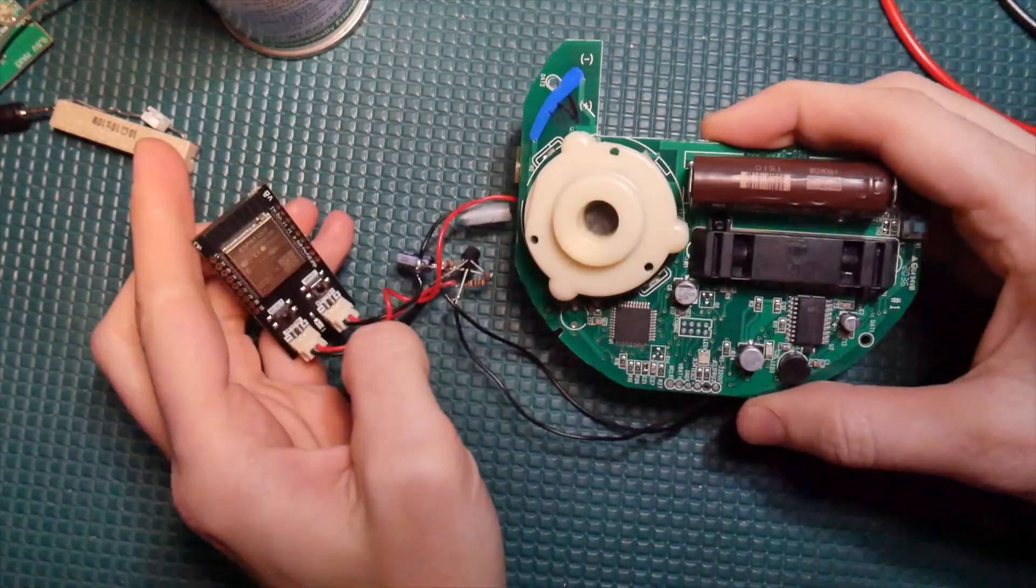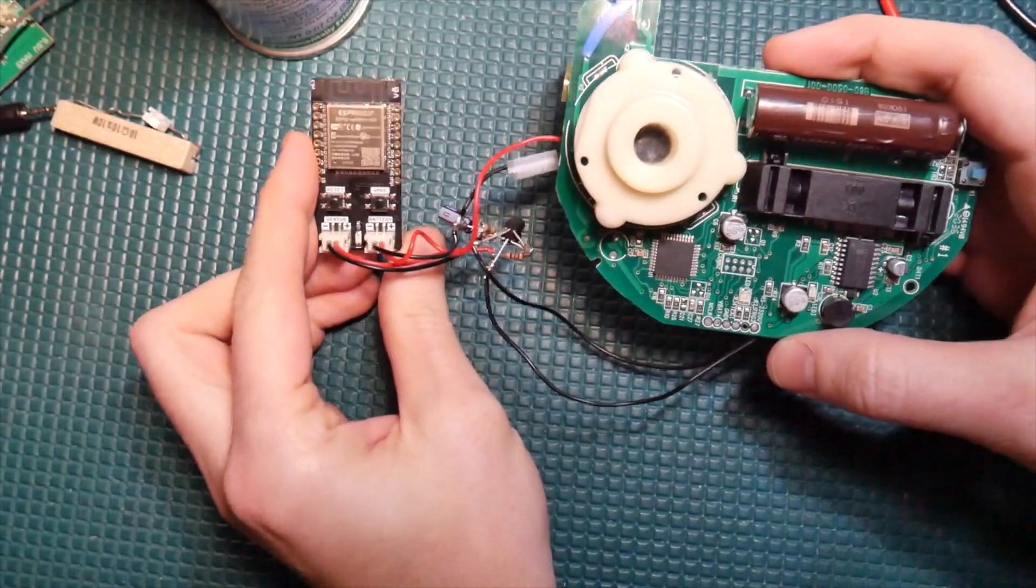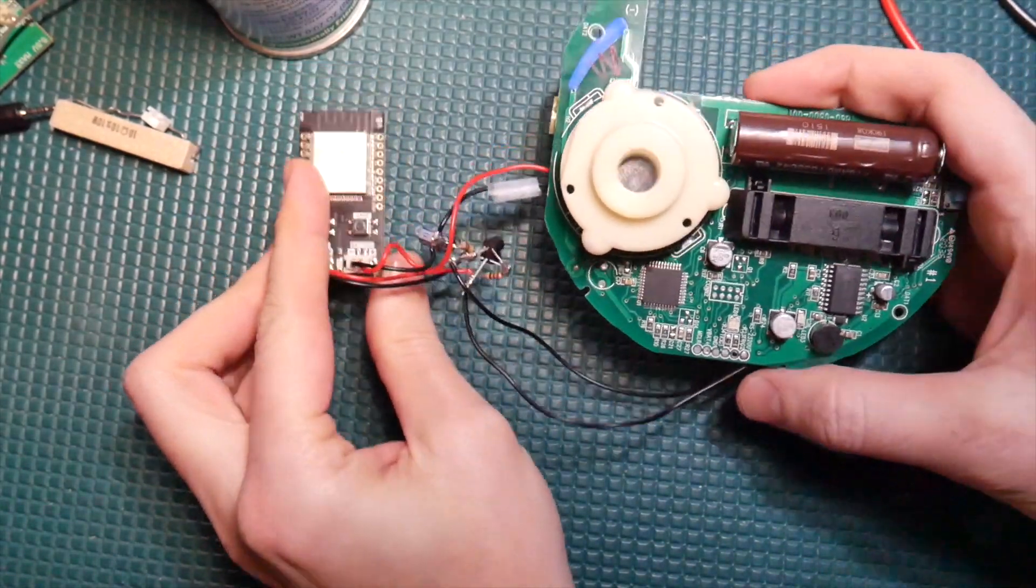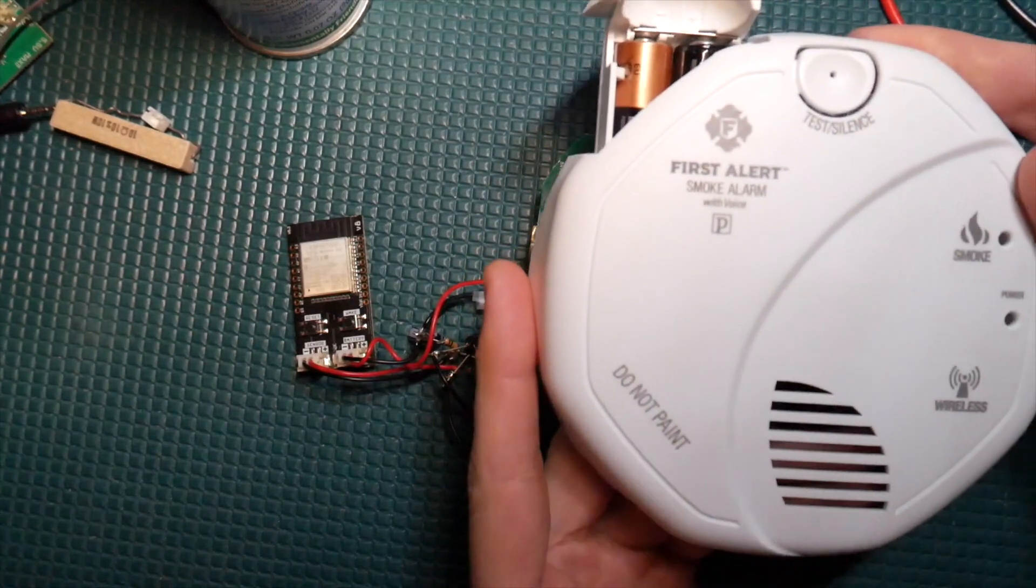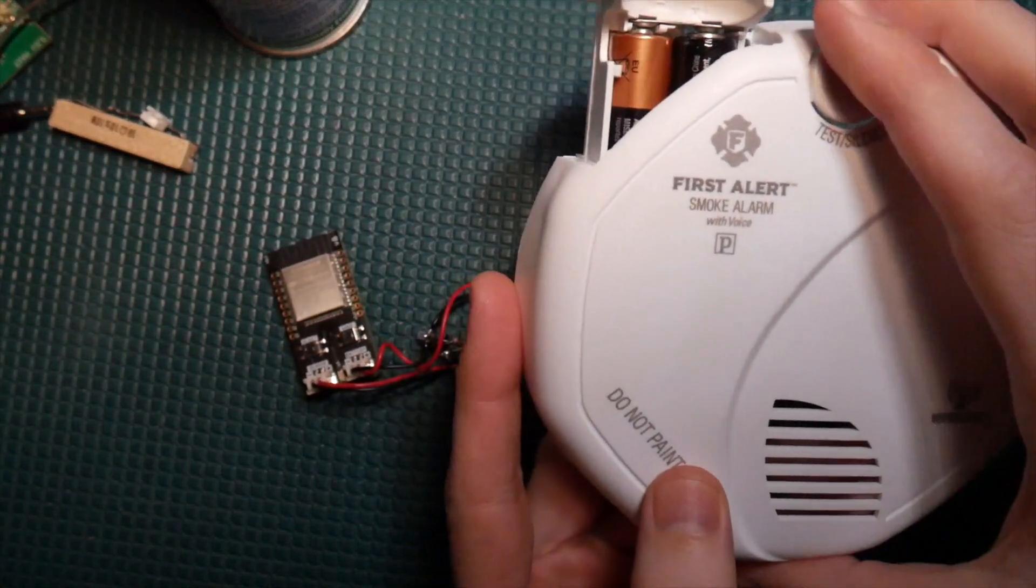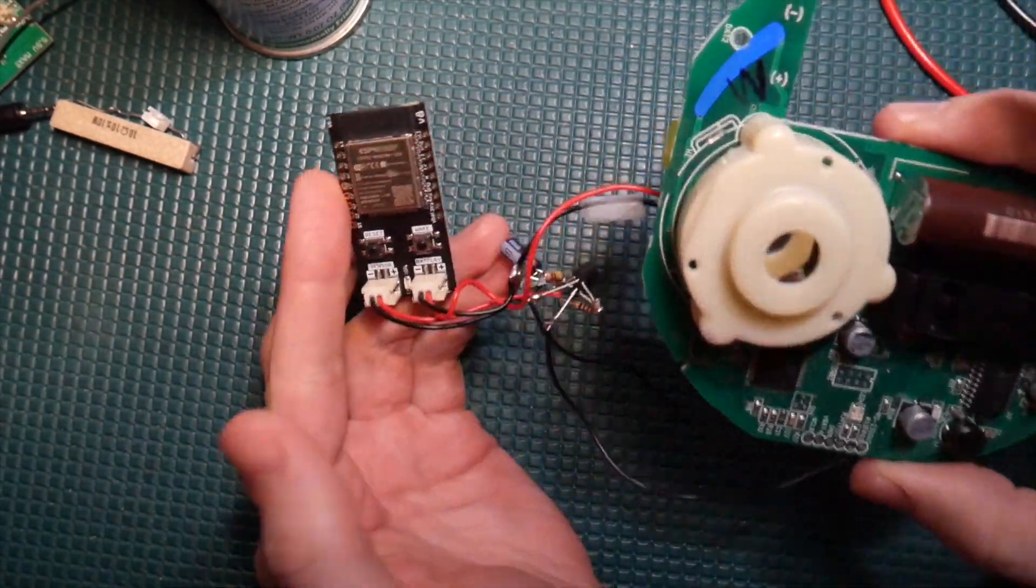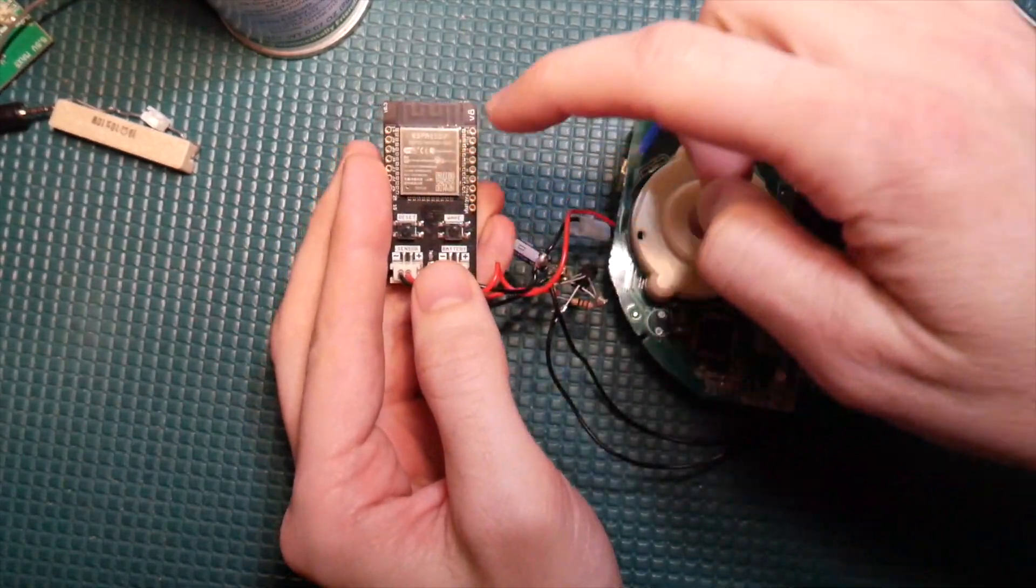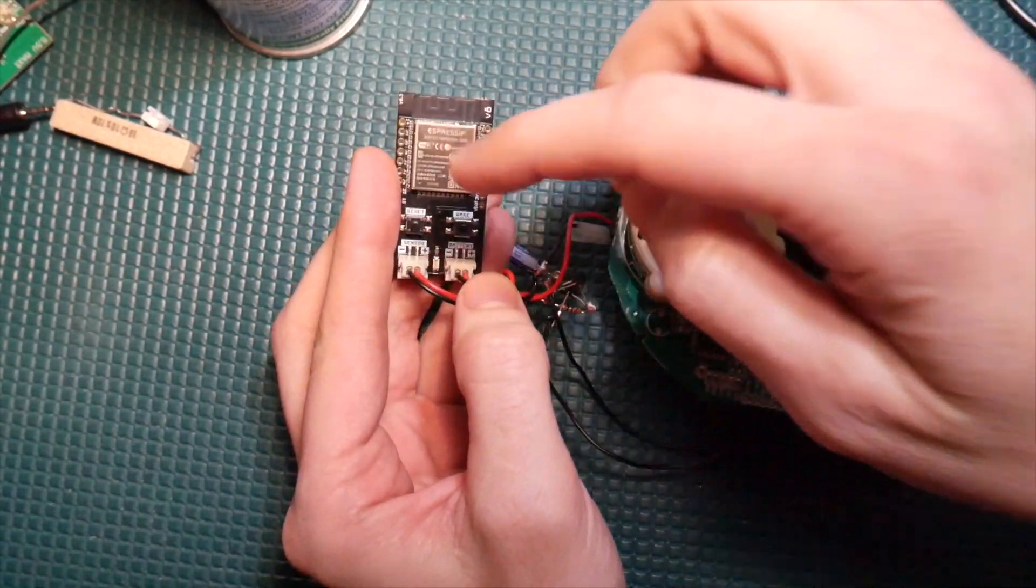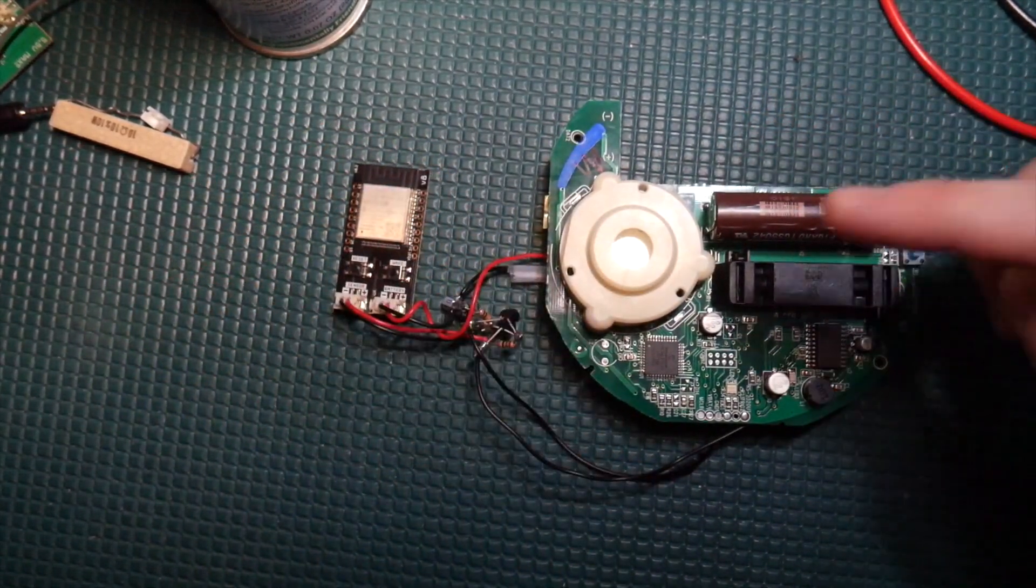Alright, we're back with the smoke detector project. As you saw in the last video, I was able to hack in a Trig board so that this off-the-shelf smoke and carbon monoxide detector can send out a push notification. When this starts alarming, it wakes up the Trig board, connects to the Wi-Fi network, and gets a push notification out to my phone.